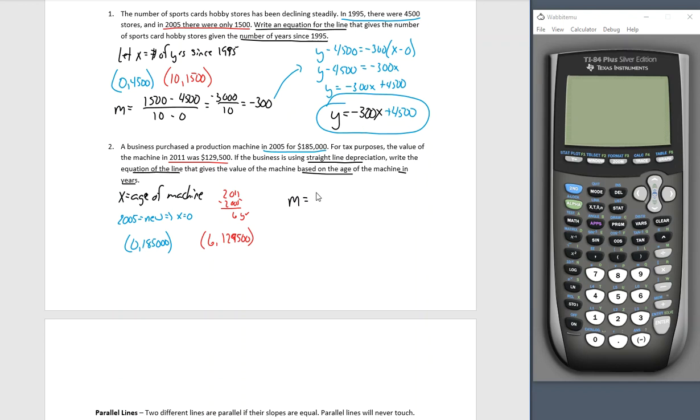We're looking for a straight line depreciation. We're looking for an equation of the line. We always find slope first 129,500 minus 185,000 all divided by six minus zero. Let's pull up our calculator. 129,500 minus 185,000 will give us a negative 55,500. That's our slope.